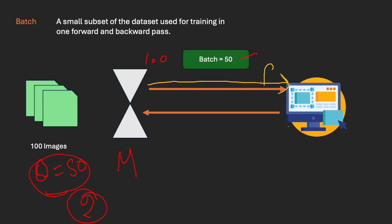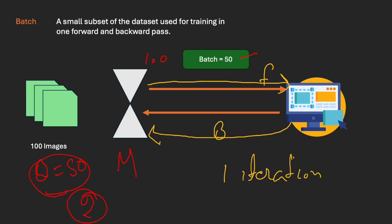From here it goes forward — this is the forward pass — and from here it comes back — this is the backward pass. So one batch has completed the whole process. For one batch completing the whole circle, we call it one iteration. By definition, iteration is one update of the model's parameters using a single batch.